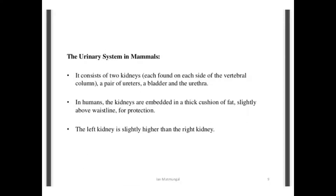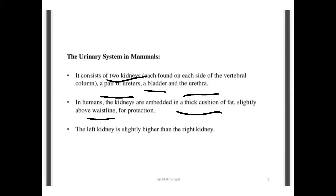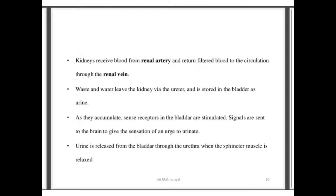The urinary system in mammals consists of two kidneys, each found on either side of the vertebral column, a pair of ureters, a bladder, and a urethra. In humans, the kidneys are embedded in a thick cushion of fat slightly above the waistline for protection. The left kidney is slightly higher than the right kidney.